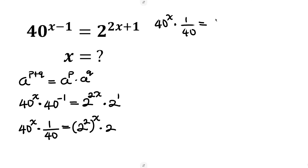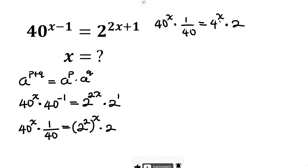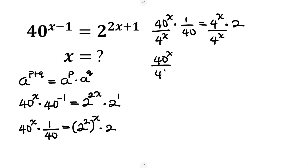So we have 40^x times (1/40) equal to 4^x times 2. Now we see x appears on both sides, so let's put the x terms together by dividing both sides by 4^x.